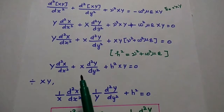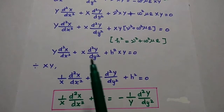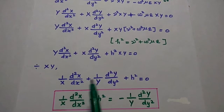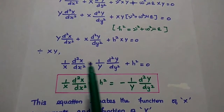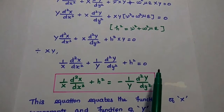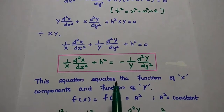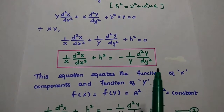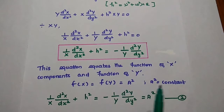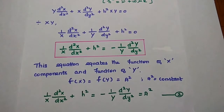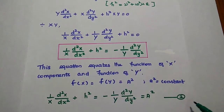Each term has both x and y components. For further simplification, we divide each term by XY. Then we get 1/X d squared X by dx squared plus 1/Y d squared Y by dy squared plus h squared is equal to 0. Now we have only the x term, y term, and constant term all equal to 0. Moving the y component to the other side, this equation equates the function of x components and the function of y components to a constant a squared. So: 1/X d²X/dx² + h² = minus 1/Y d²Y/dy² = a squared. Consider this as the second equation.